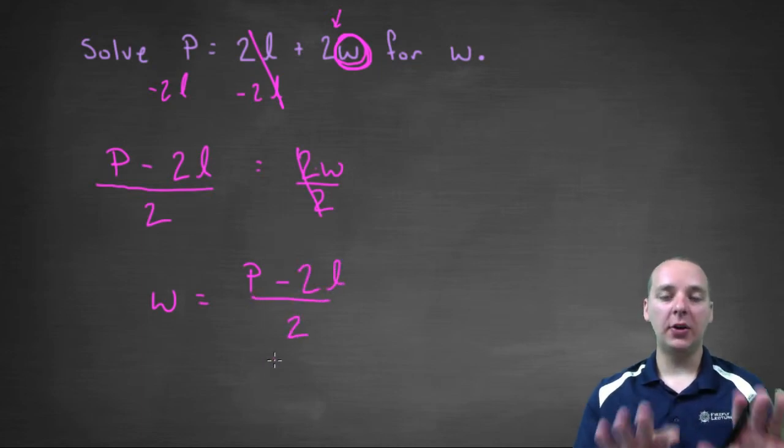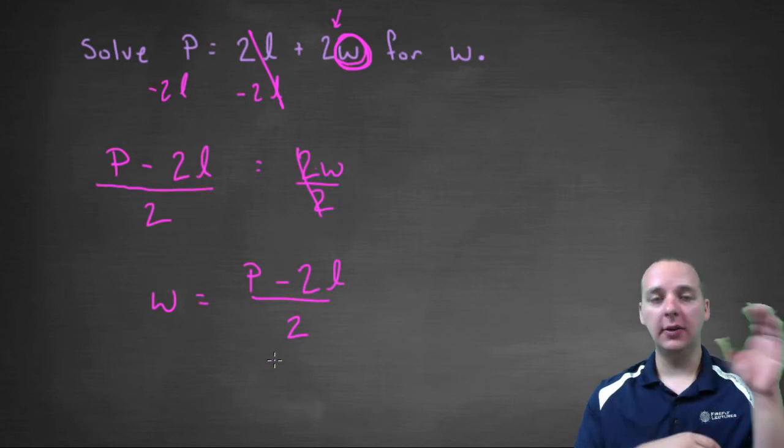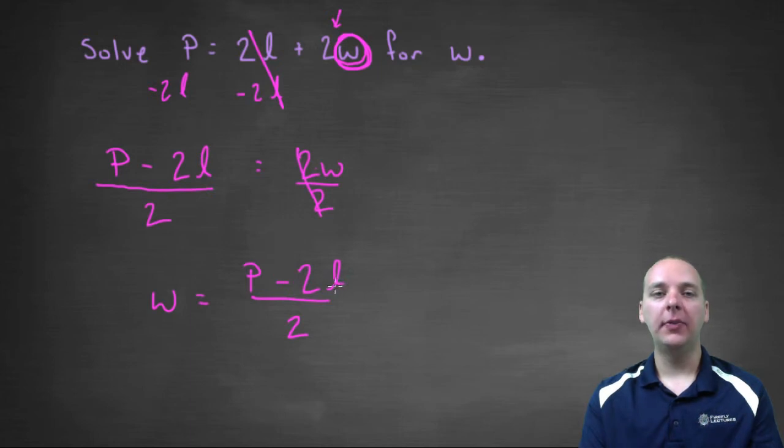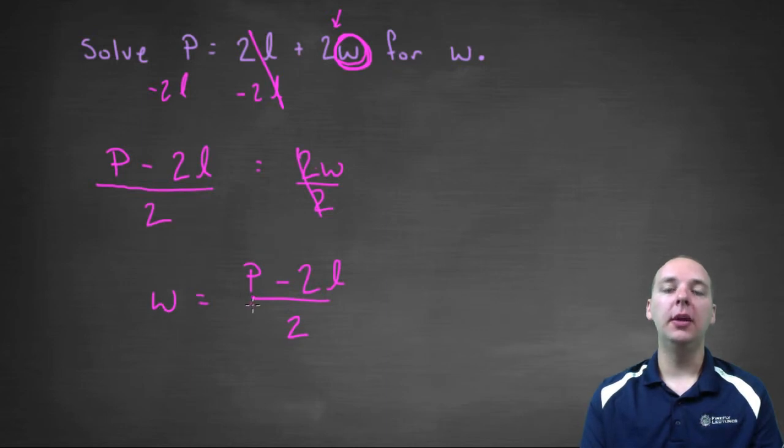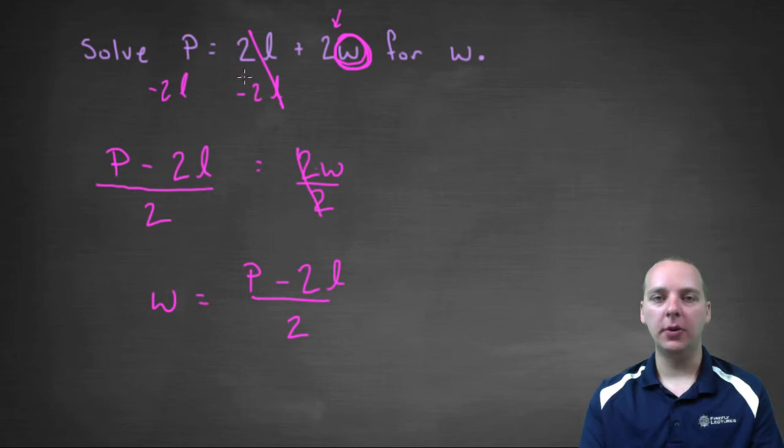So that equation is equivalent to the very first equation, but this one is written in terms of P and L, as opposed to L and W. Now if you had a hypothetical rectangle where you knew the perimeter was eighteen and you knew the length was four, then you could solve and figure out what the width would need to be. This is a very typical exercise you could expect to see.